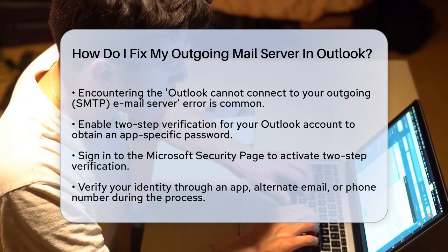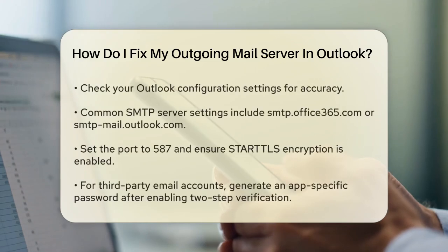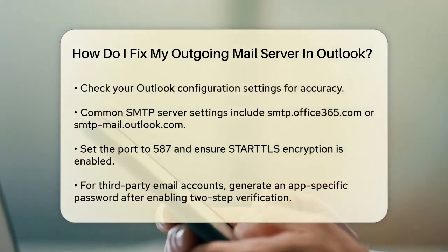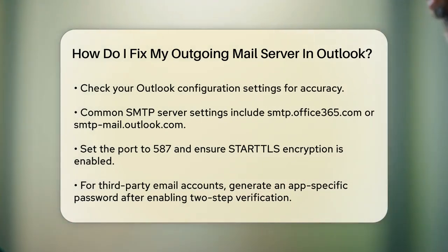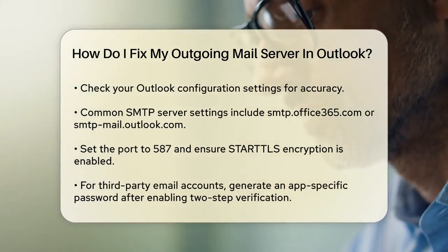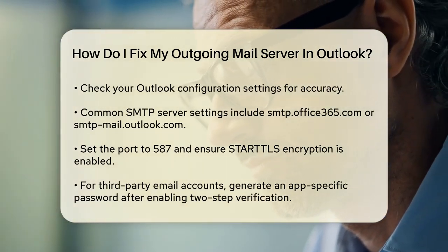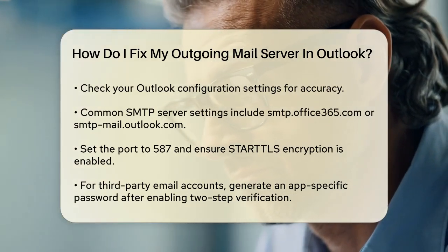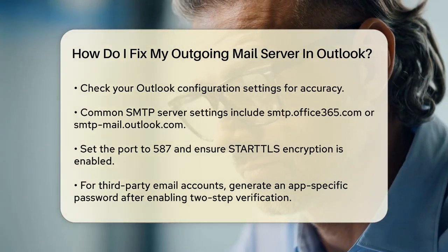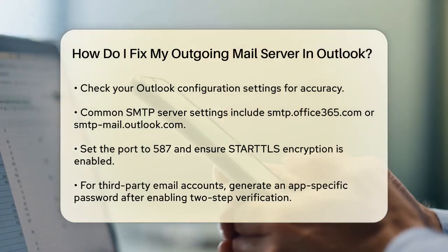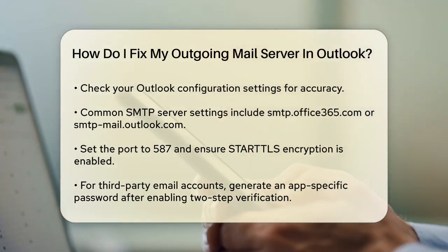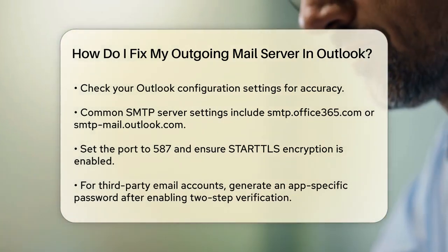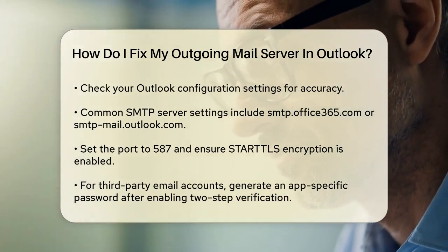Next, check your Outlook configuration settings. One of the most common reasons for this error is incorrect configuration. Make sure your SMTP server settings are correct. For Outlook accounts, the SMTP server is usually smtp.office365.com or smtp-mail.outlook.com, and the port should be set to 587 with StartTLS encryption. If you're using a third-party email account, you'll need to generate an app-specific password after enabling two-step verification.